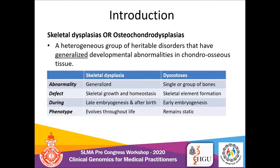Skeletal dysplasia, or osteochondrodysplasia, are a broad heterogeneous group of heritable disorders that have generalized developmental abnormalities in bone and cartilage tissue. By definition, skeletal dysplasia have generalized abnormalities, while dysostosis is the term used for disorders characterized by abnormalities in a single or group of bones.